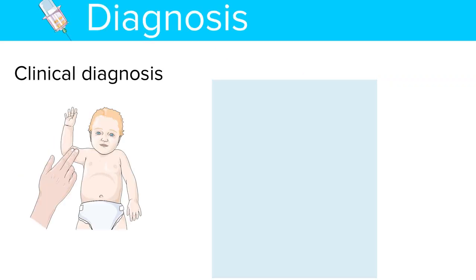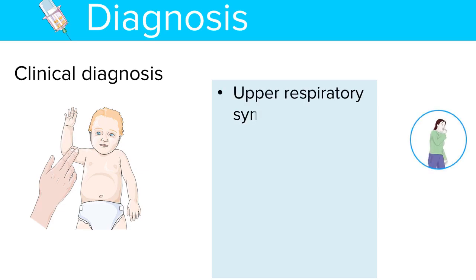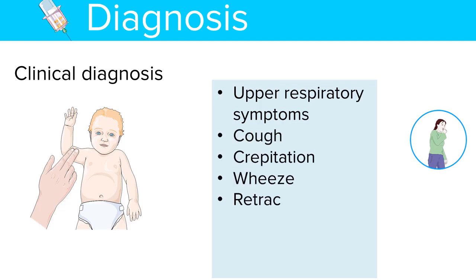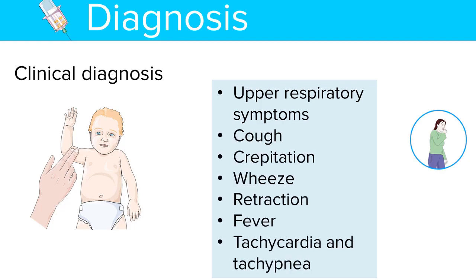Diagnosis of bronchiolitis is a clinical diagnosis made by physical examination and history taking. On examination, patients present with upper respiratory symptoms such as cough, crepitations, and wheeze.